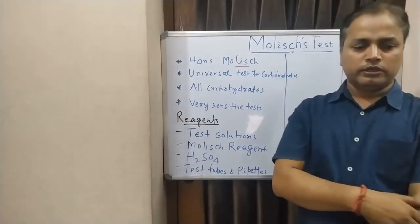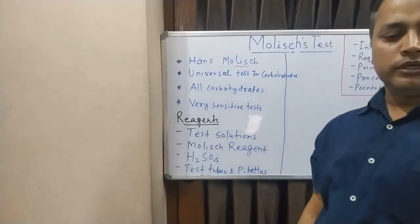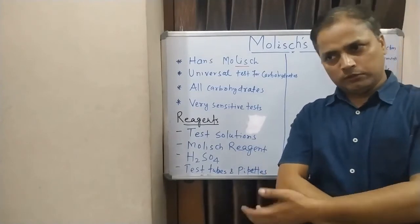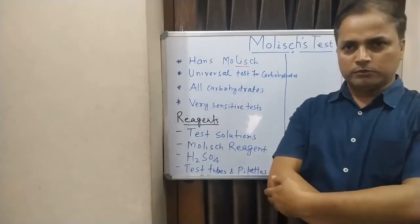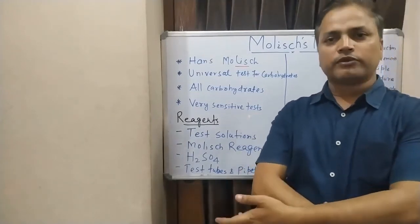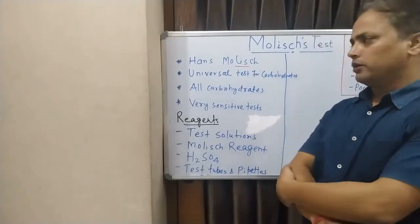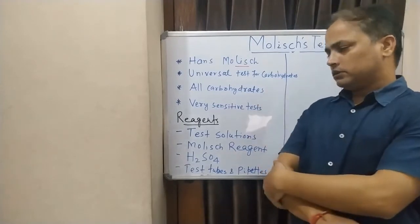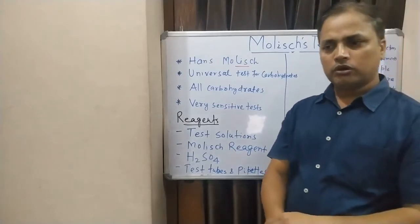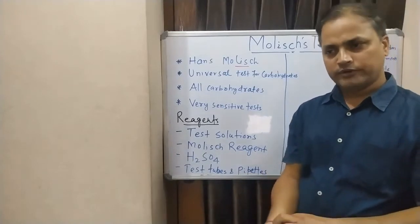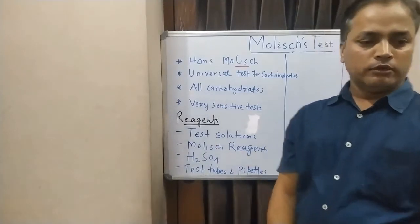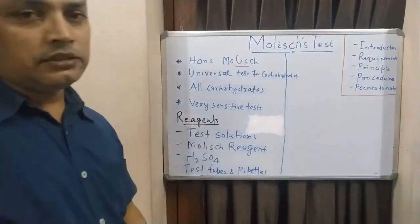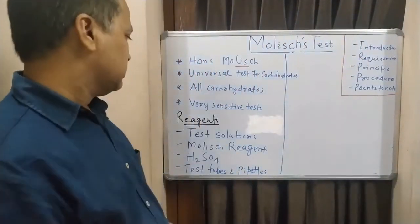Whatever carbohydrates we have, whether in free form or associated form — whether monosaccharide, disaccharide, or polysaccharide — the Molisch's test is positive for all types of carbohydrates. It is also a very sensitive test, meaning almost all carbohydrates in whatever amount will give a positive result.